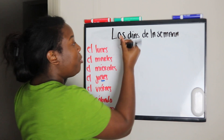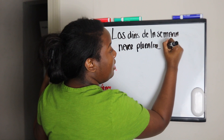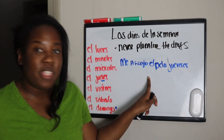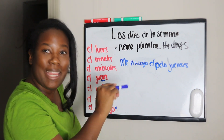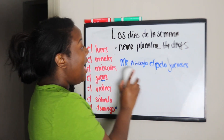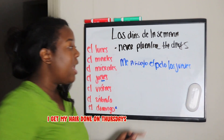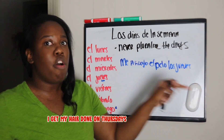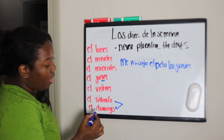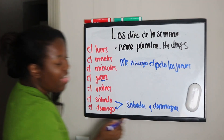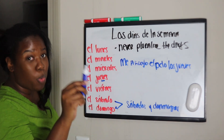Numero uno: you never pluralize the days. You would never say "jueveses" — that makes no damn sense. What are you even talking about? We don't pluralize these days, boo. The only ones we do pluralize are sábado and domingo — you can put an S at the end for the weekend. That's it. The rest of the five days of the week, you never pluralize them, okay? You're wrong if you do.